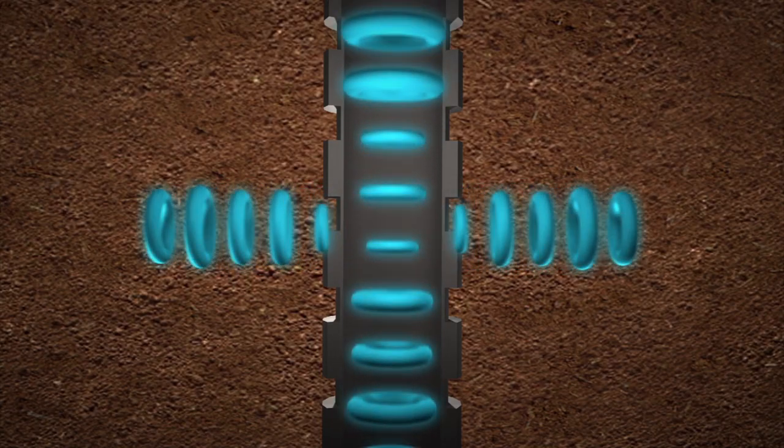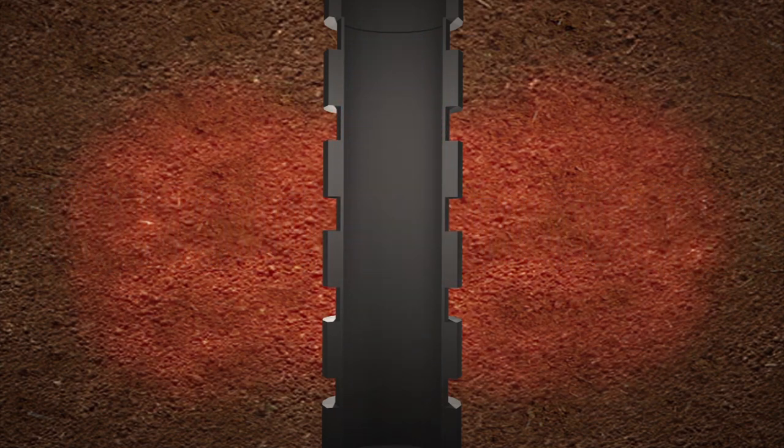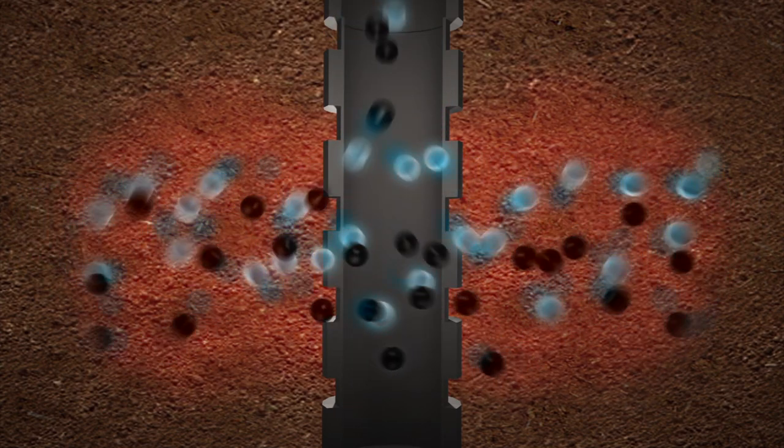The microwaves agitate the water trapped in the shale and turn it to steam, which in turn releases the oil from the shale.